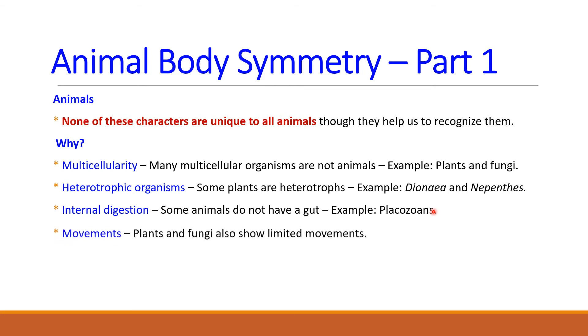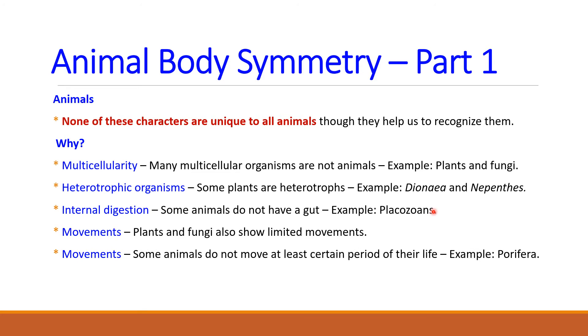The next character is movements. Plants and fungi also show limited movements. Just take a look at the ornamental plants that grow inside your home. If you carefully observe these plants, you will be able to see they grow towards the sunlight. On the other hand, some animals do not move throughout their lives or at least certain period of their life cycles. For an example, poriferans. If you take adult poriferans, they are sessile forms and attached to the substrate.